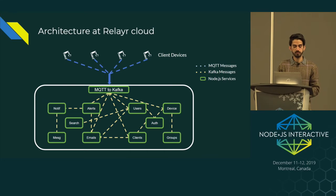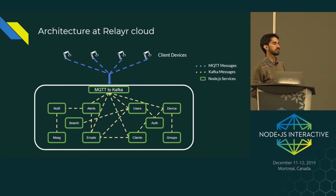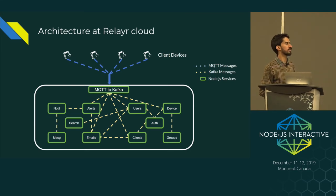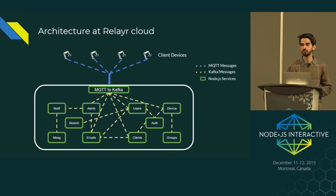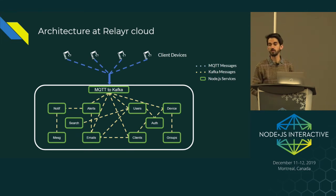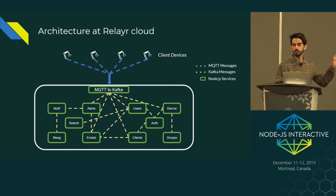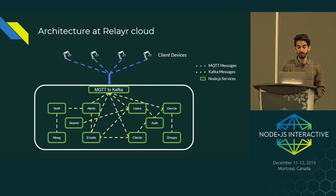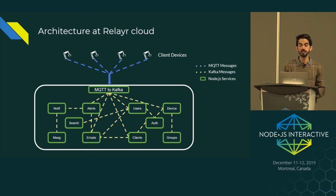We had something like this: client devices sending data through MQTT to our cloud, then a broker converting MQTT messages to relative Kafka messages, and these are our services communicating internally through Kafka. There was a lot of communication going on, and we wanted something for documentation and to validate all the messages — to check if they have the required payload or not.